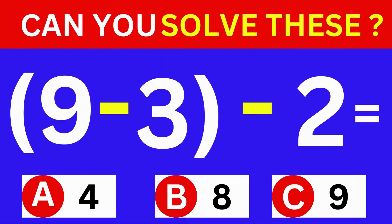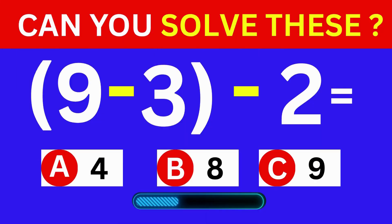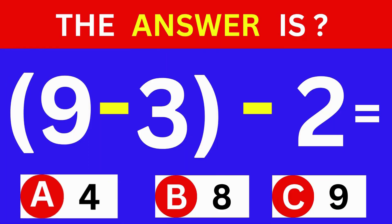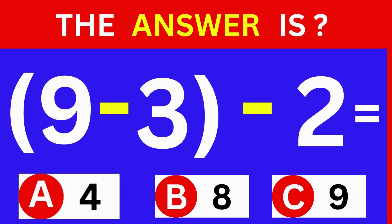9 minus 3 minus 2 equals? A: 4. B: 8. C: 9. The answer is option A, which is 4.